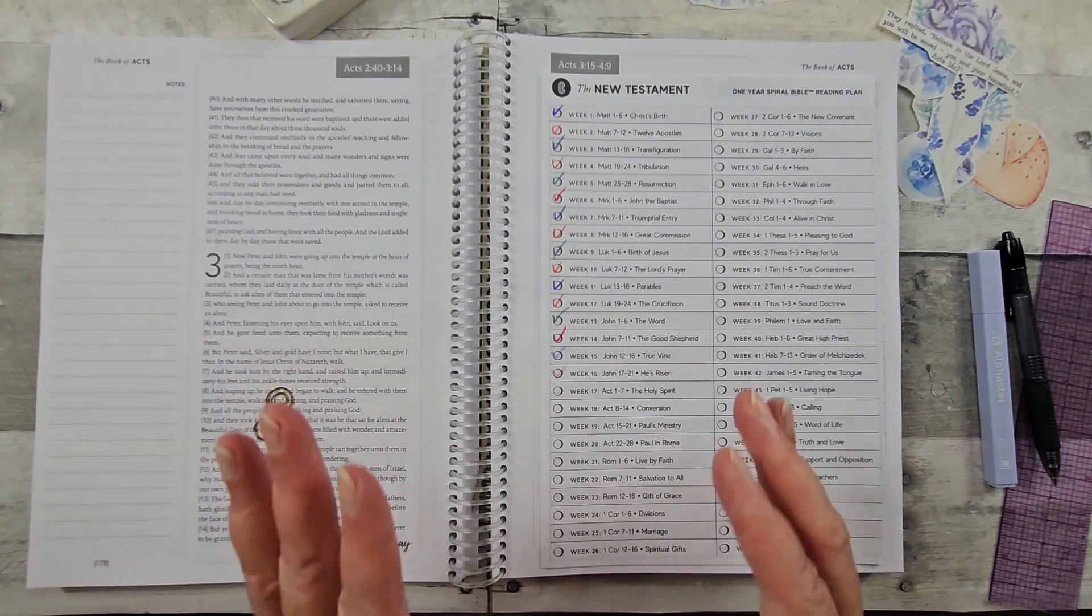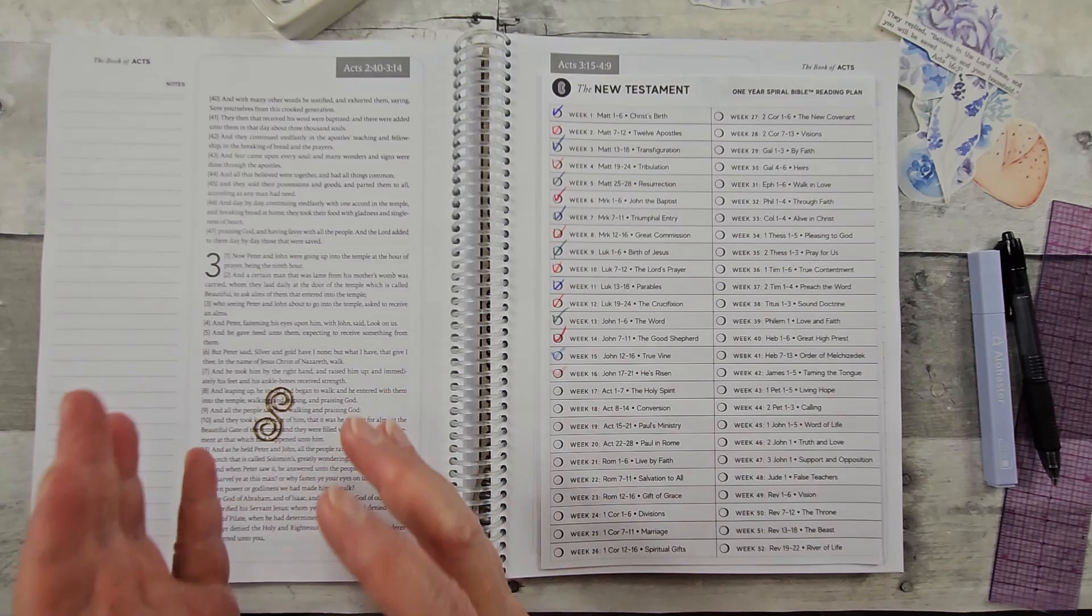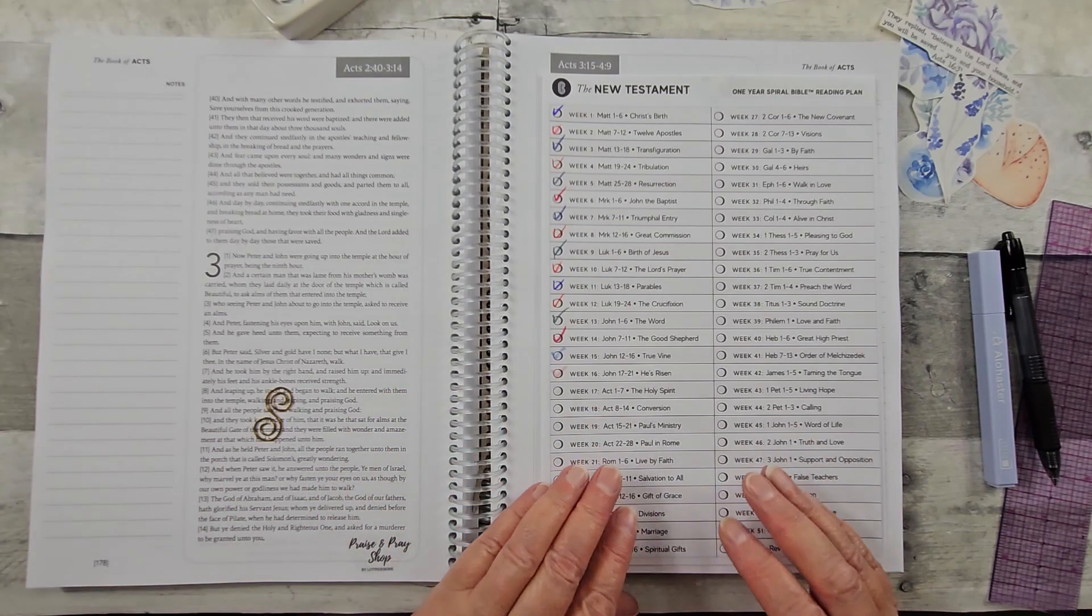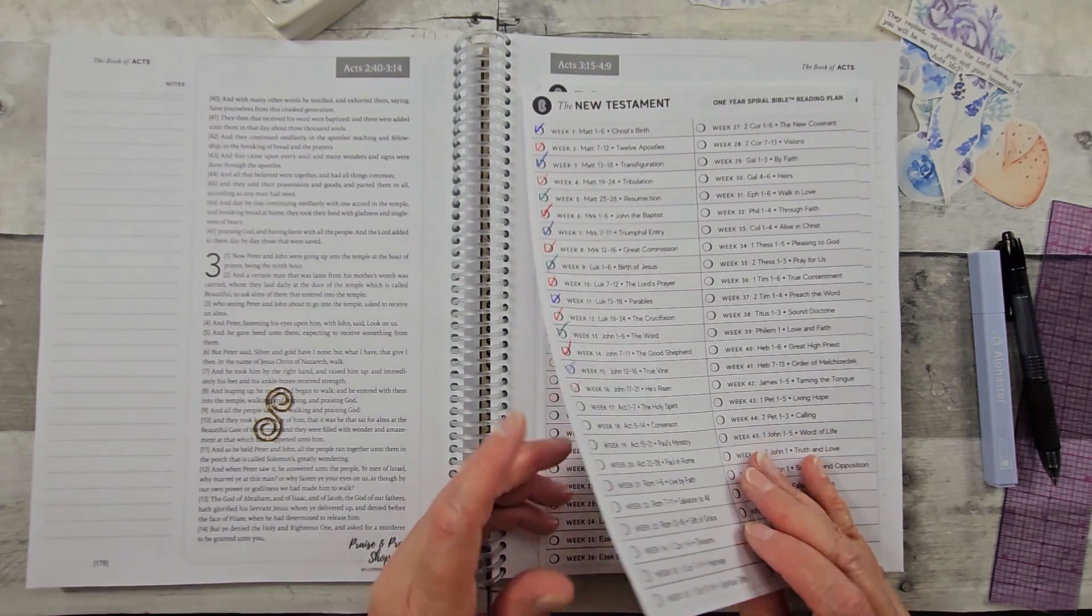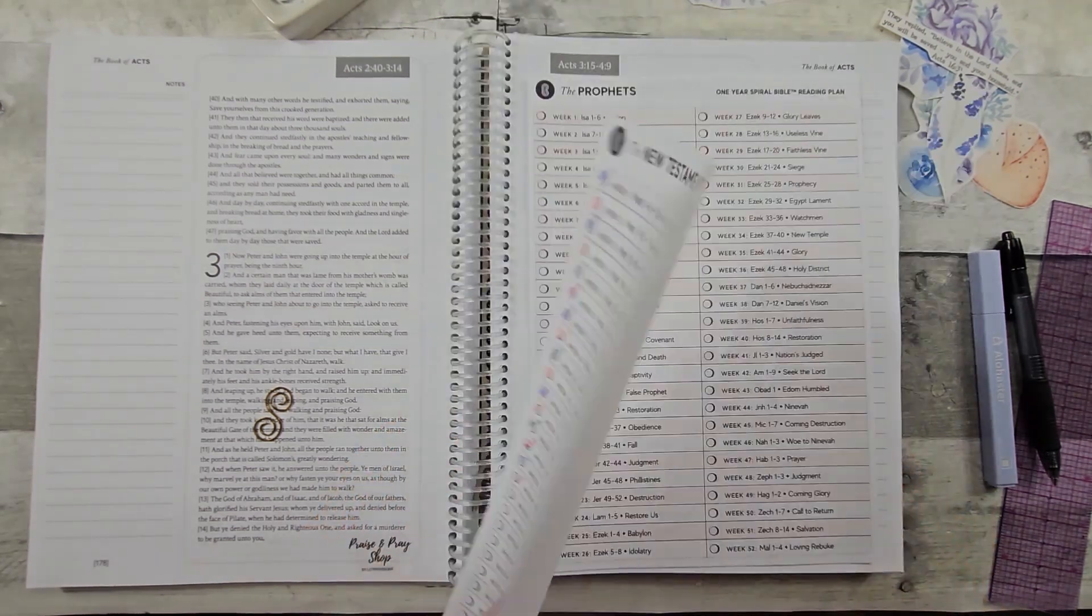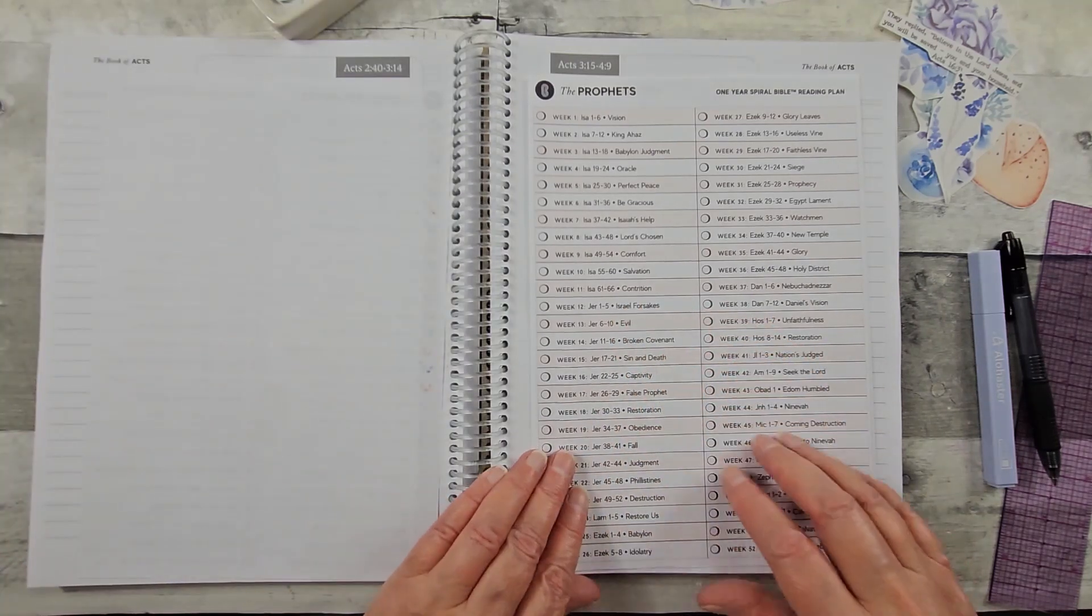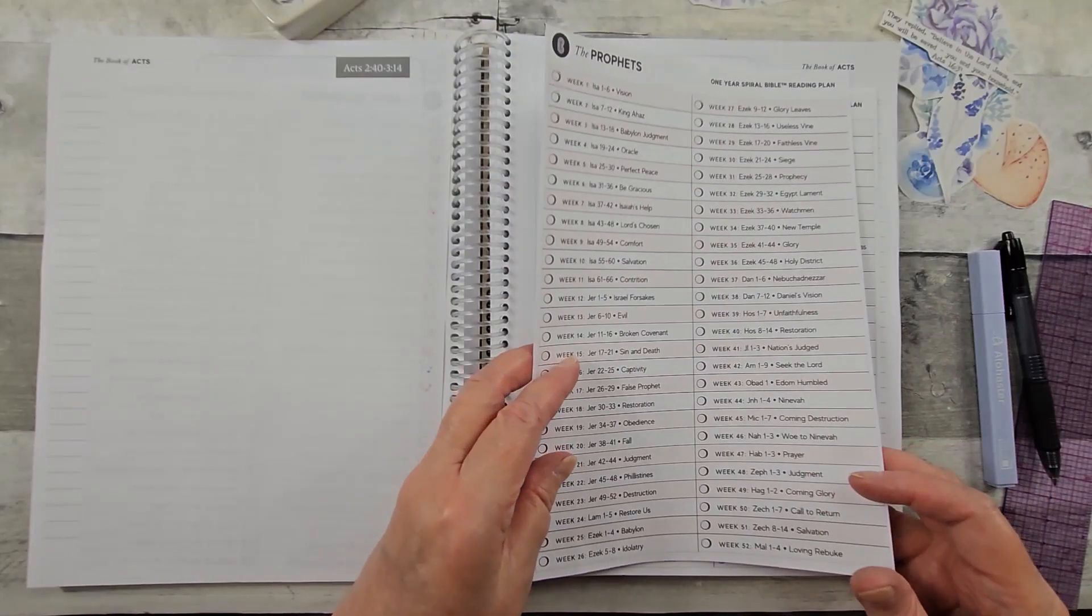They have it broken down into digestible pieces. So I chose to do the New Testament. You can see my progress here. But they also have it broken down into the Prophets, and you see it's in 52 weeks.